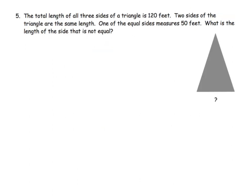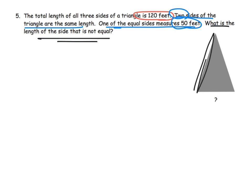And the last problem. We have a total length of all three sides of a triangle is 120 feet. Two sides of the triangle are the same length, and one of the equal sides is equal to 50. So one of those two sides is equal to 50. And then what is the length of the side that is not equal? So we have this length right here is 50 feet. We have this length right here which is also 50 feet because we're told that. And then the question is, what is this length that is not equal?